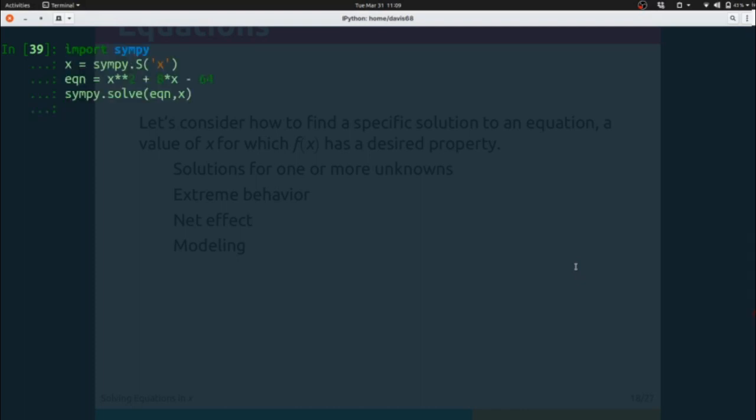For instance, here we have the equation x squared plus 8x minus 64. When this is set equal to zero and rearranged algebraically, that yields the solution in x. Here, Sympy gives us the positive and the negative branches of that root.